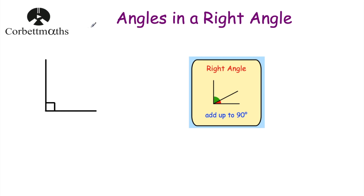Hi, welcome to this Corp Mads video. In this video we're going to look at angles and a right angle. Here we've got a right angle and it's shown with this symbol, which means it's a 90 degree angle. So all right angles are 90 degrees.